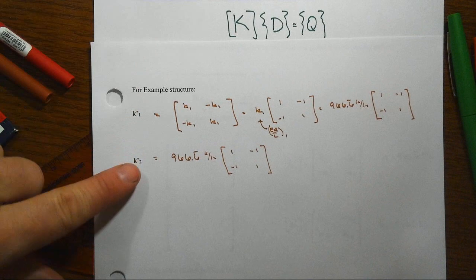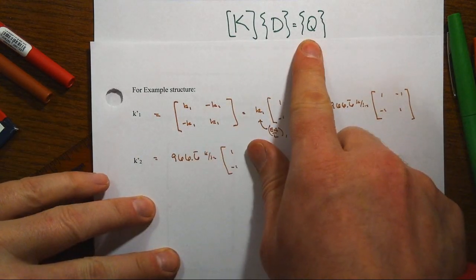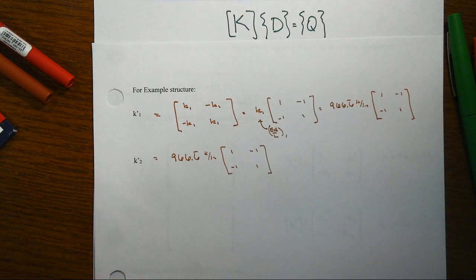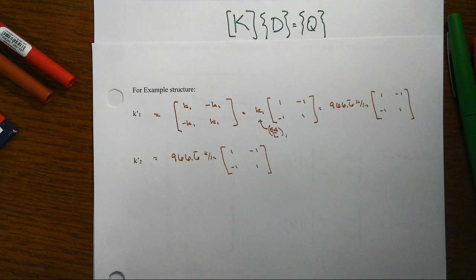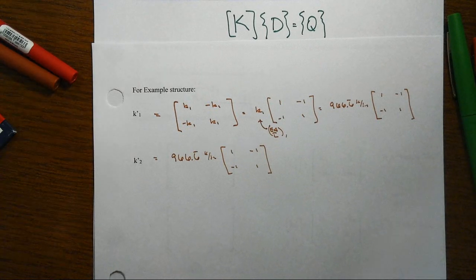Now doing something with these element stiffness matrices and putting them into this big global system initially seems kind of odd and it makes more sense after you do this a number of times. So we want to get through this and then we can come back and look at what the meaning of it is later.